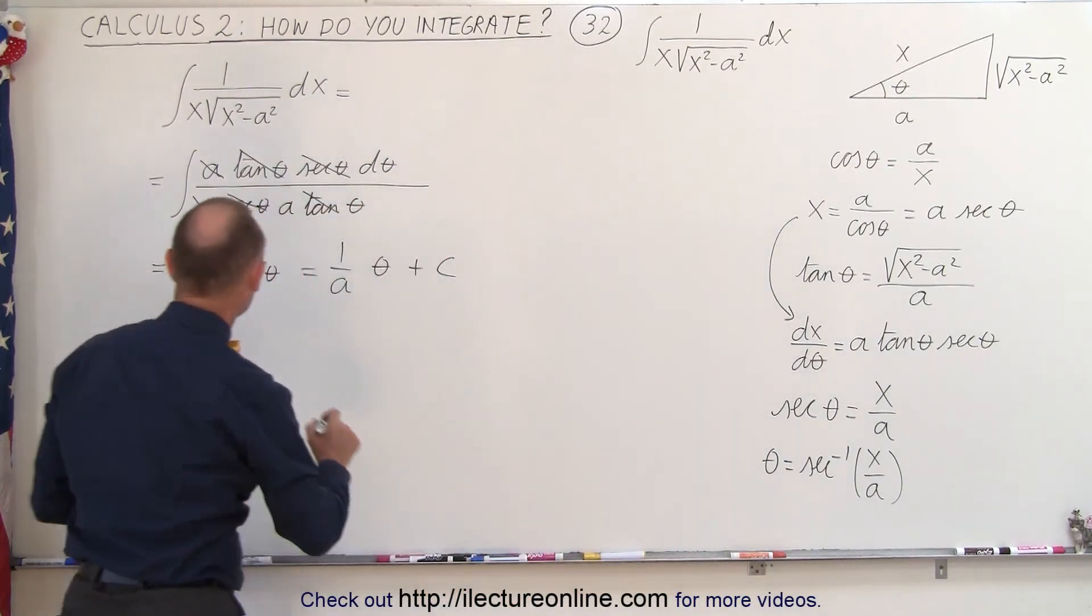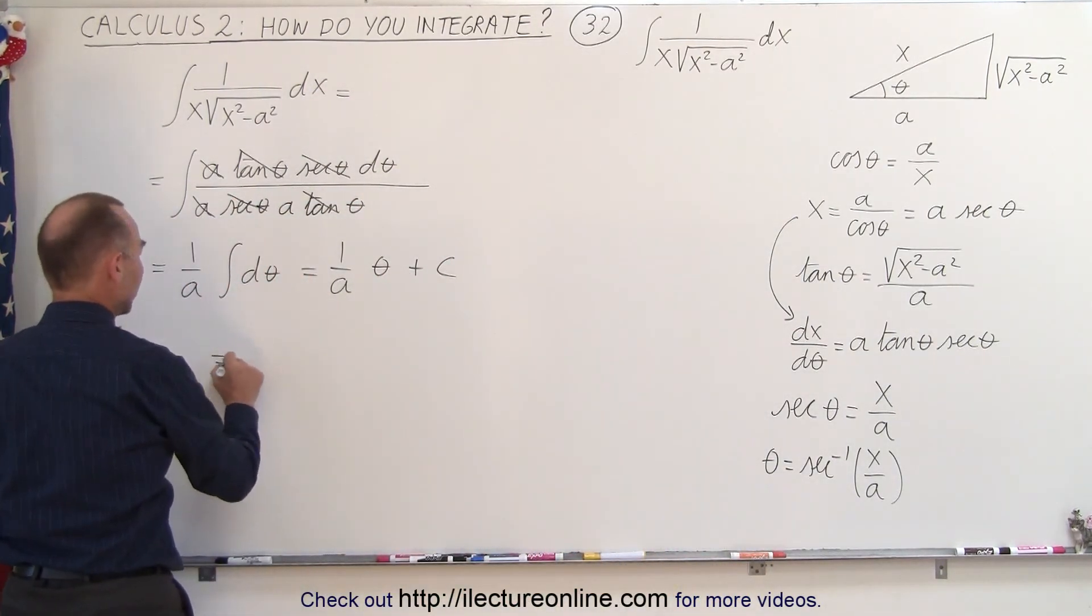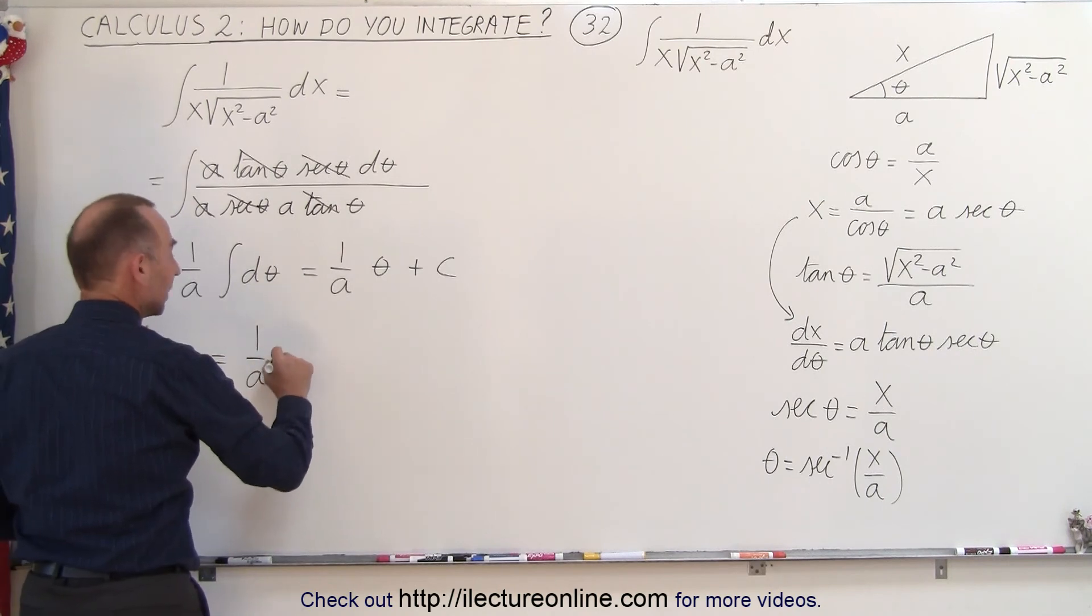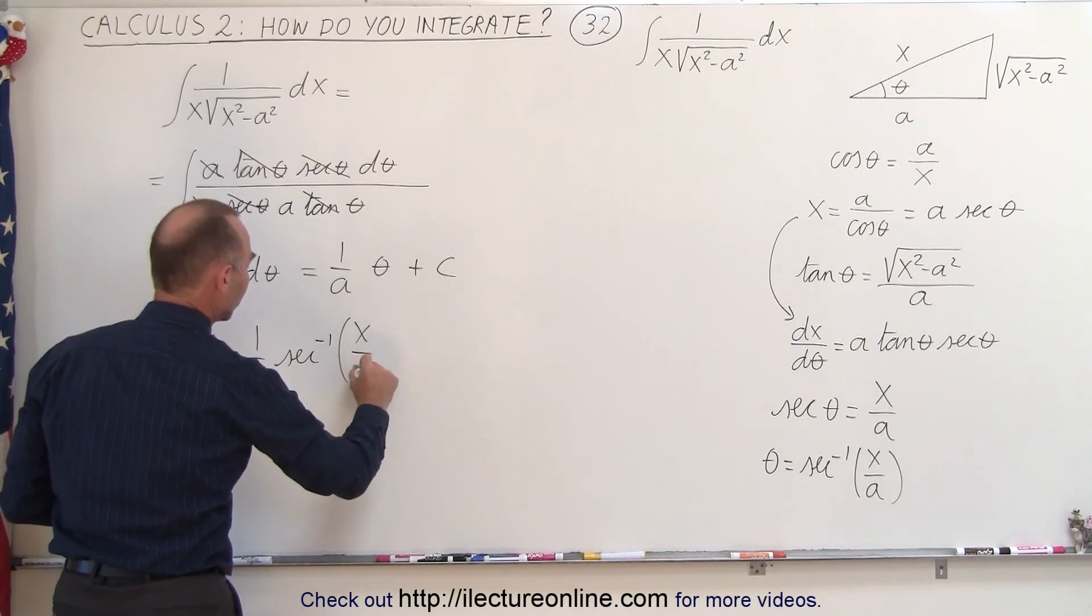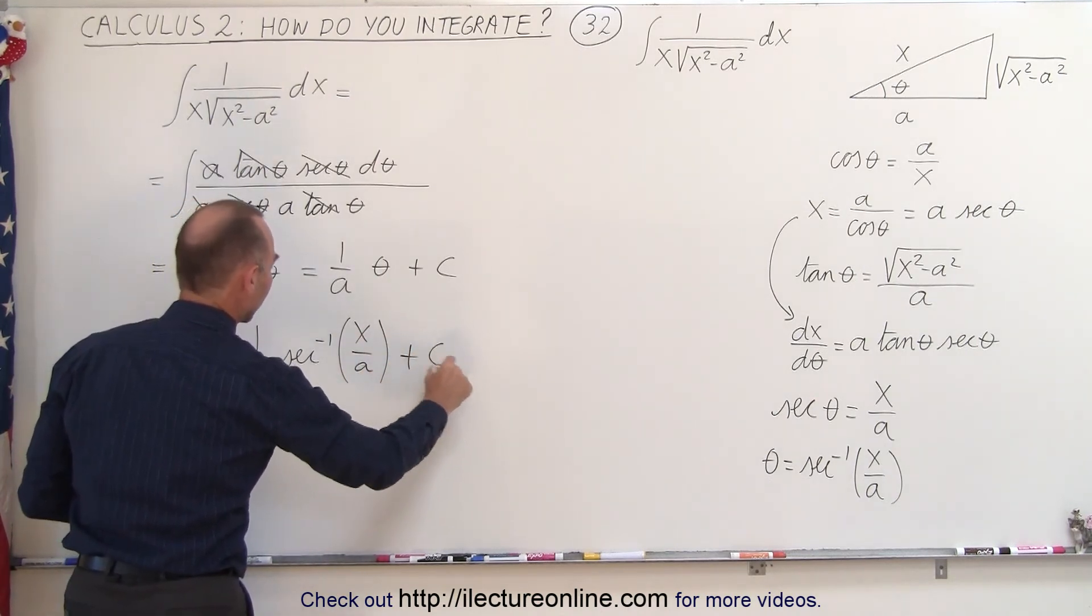So we can then substitute, which means that this becomes equal to 1 over a times the inverse secant of the ratio of x over a plus a constant of integration.